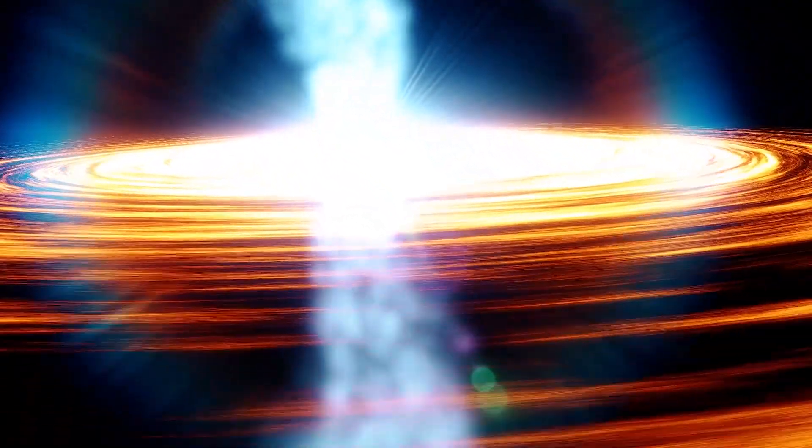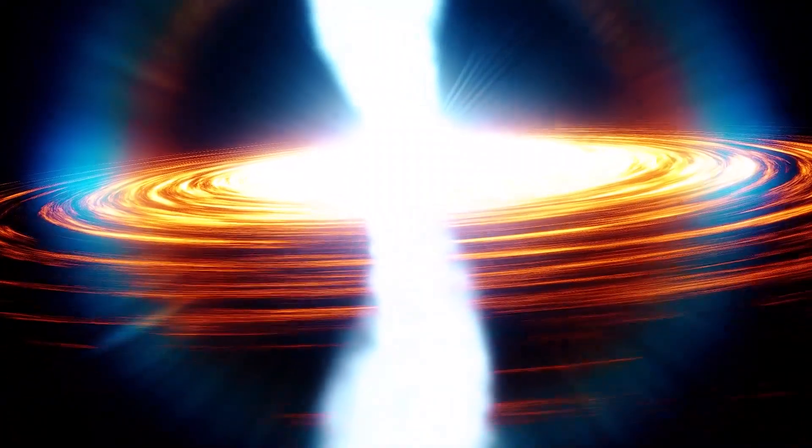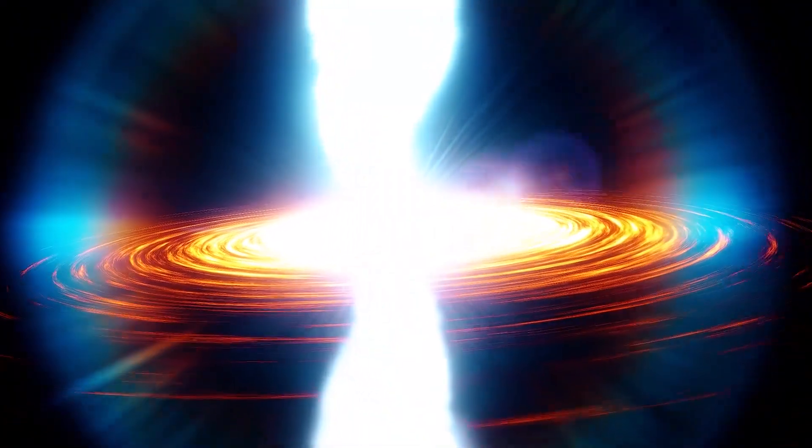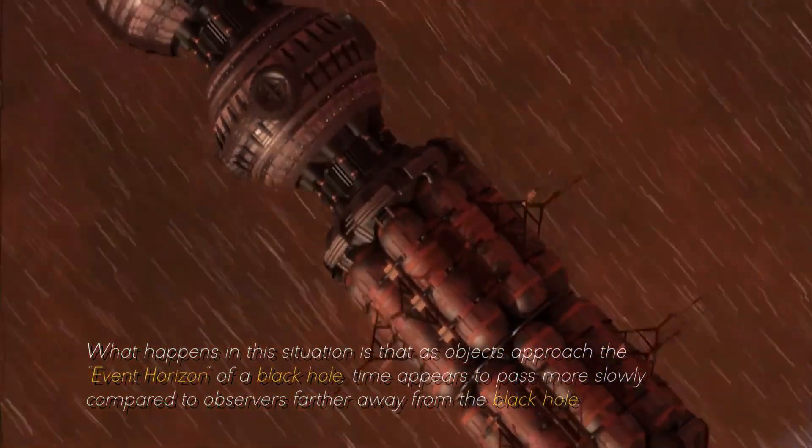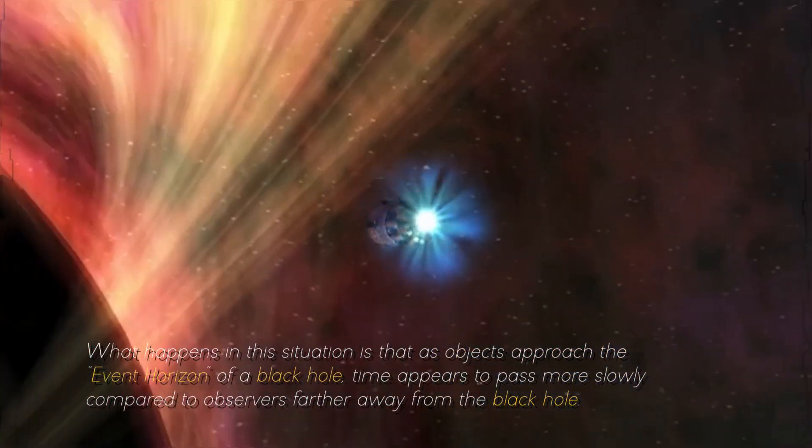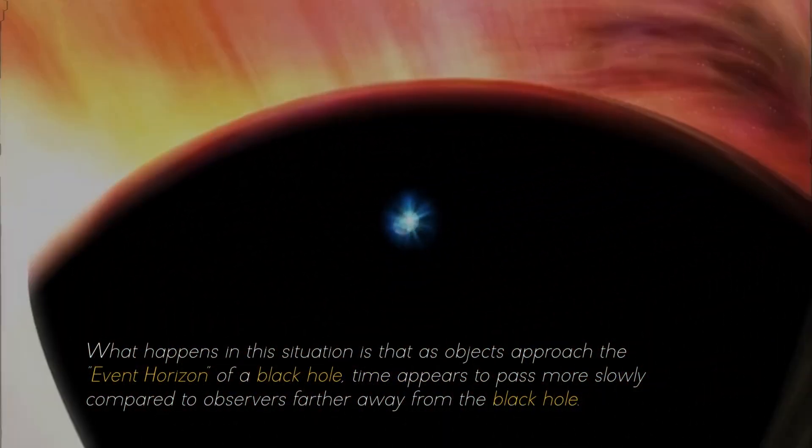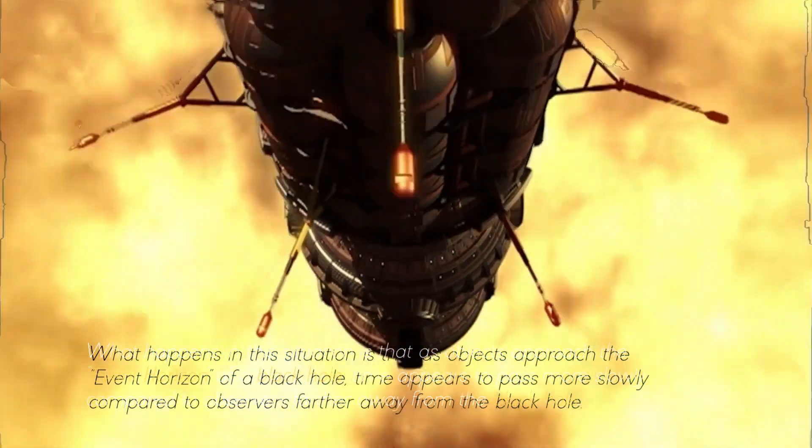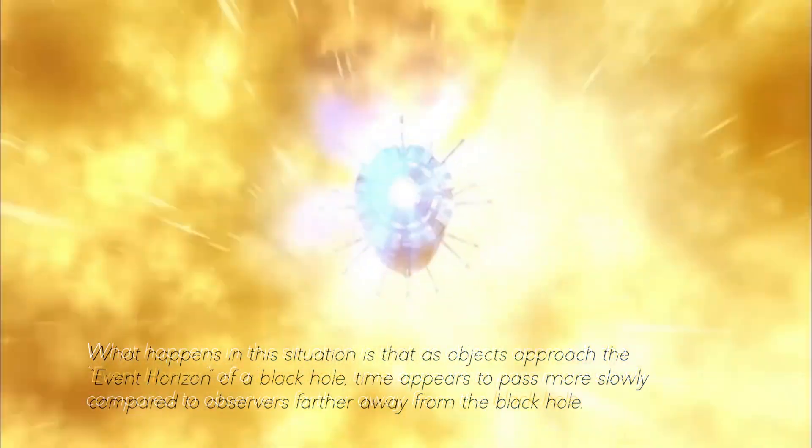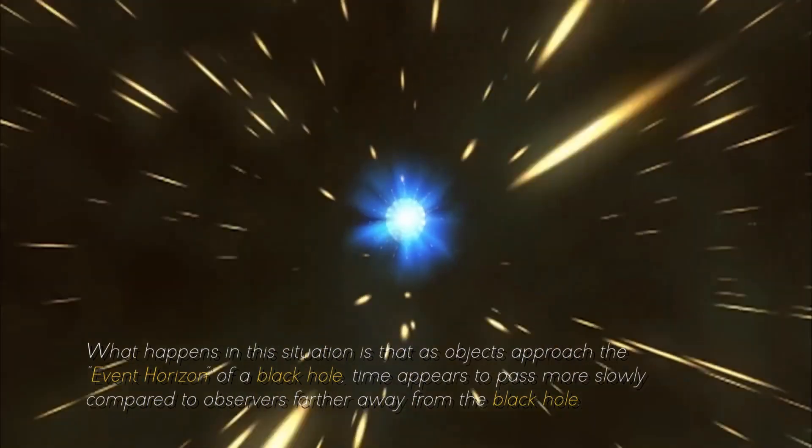But most surprising of all, the extreme gravitational attraction near a black hole gives rise to a phenomenon known as time dilation. What happens in this situation is that, as objects approach the event horizon of a black hole, time appears to pass more slowly, compared to observers farther away from the black hole.